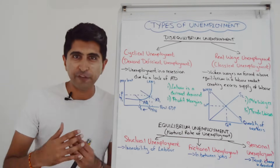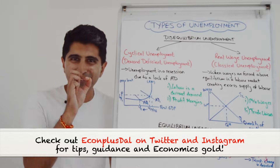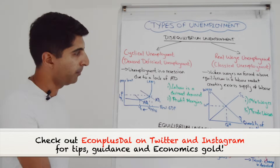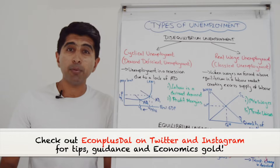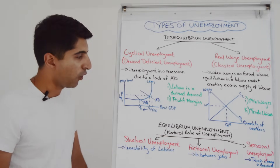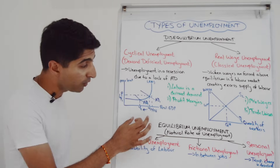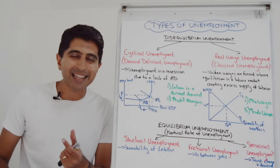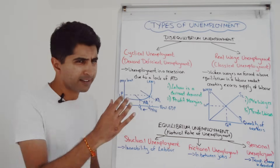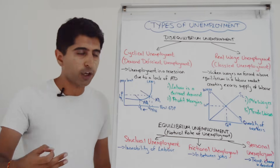There are two types that fall under the heading of disequilibrium unemployment. First, you have cyclical unemployment, also known as demand deficient unemployment. Simply put, this is unemployment that occurs in a recession when there is a lack of AD in the economy. Diagrammatically, a simple AD shift to the left will show the fall in real GDP, but we can link that to a rise in unemployment as well. Let's understand how precisely a fall in AD could mean higher cyclical unemployment.